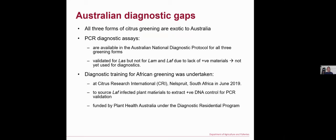At the moment, all three forms of citrus greening are exotic to Australia. However, because they are spreading, they potentially pose a biosecurity threat to Australia. We have diagnostic assays for all of them; however, only those for the Asian form have been validated and used for diagnostics, but not for the other two — CLam and CLaf — because we don't have positive material for them.